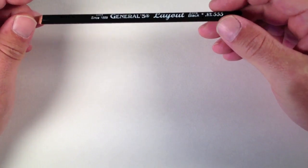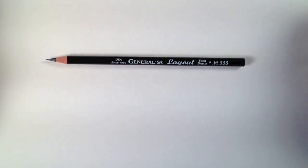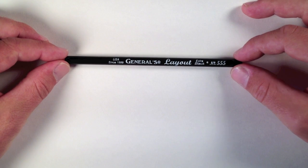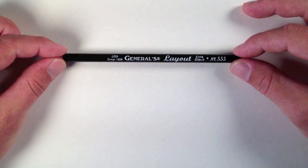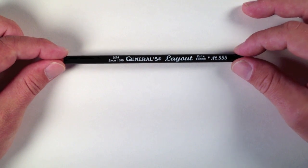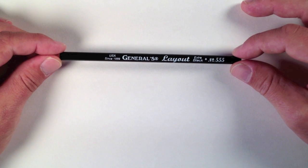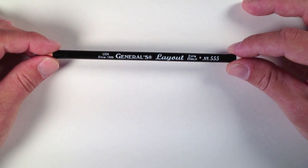It's a pencil, and it's the General's Layout Pencil. It is absolutely my favorite pencil to work with when I am drawing. You can see it's made in the USA, they've been around since 1889. It's manufactured by a company called General's in New Jersey in the USA. It says extra black number 555 at the end.